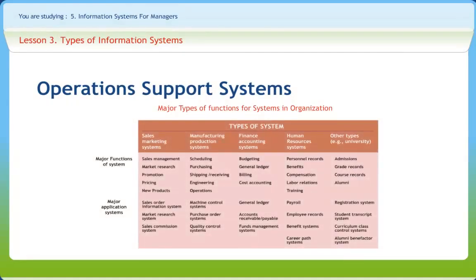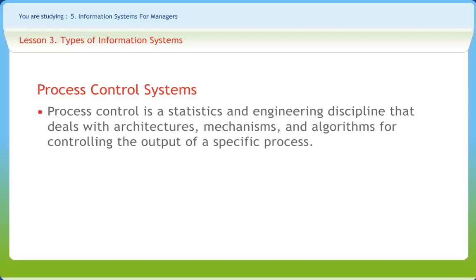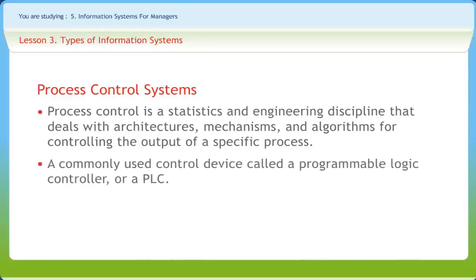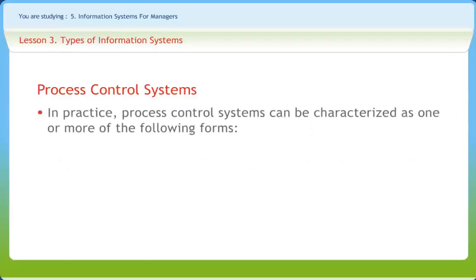Let us look at this figure to understand major types of functions for systems in an organization. Process control is a statistics and engineering discipline that deals with architectures, mechanisms, and algorithms for controlling the output of a specific process. A commonly used control device called Programmable Logical Controller, or PLC, is used to read a set of digital and analog inputs, apply a set of logic statements, and generate a set of analog and digital outputs. Process control systems can be characterized as discrete, batch, or continuous. Discrete form is found in many manufacturing and packaging applications; robotic assembly in automated production is one example.